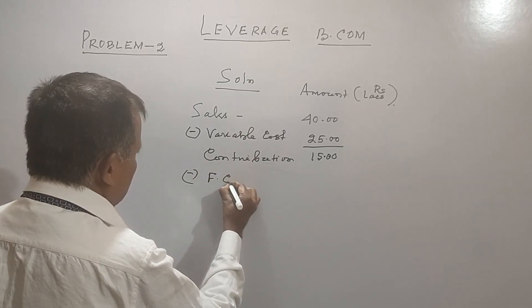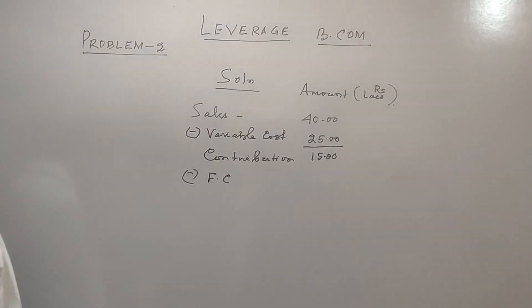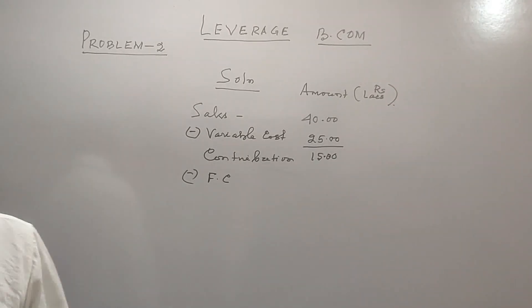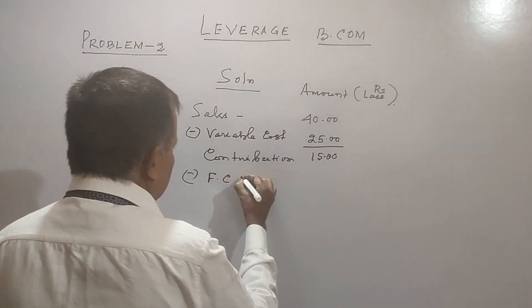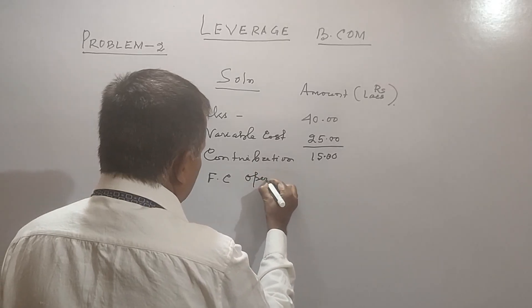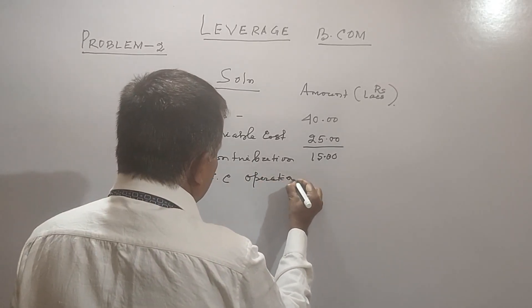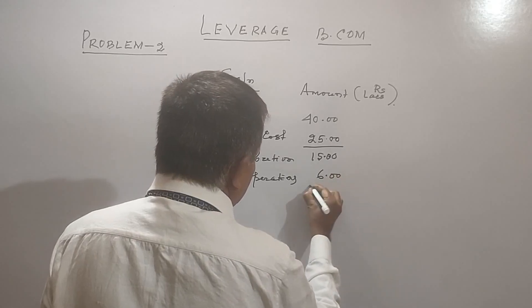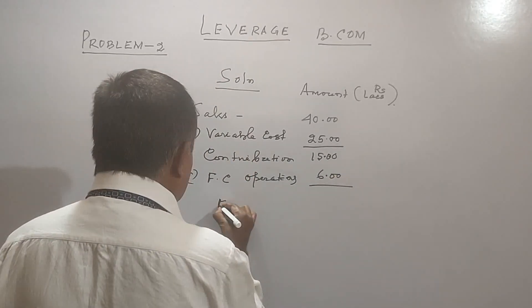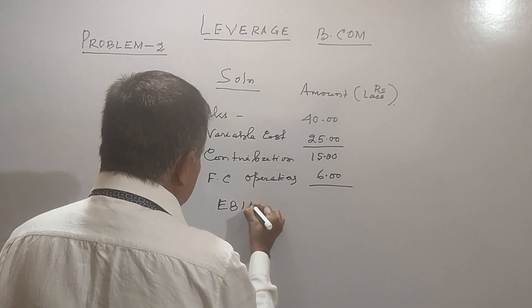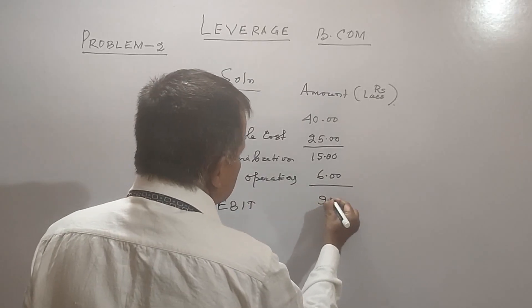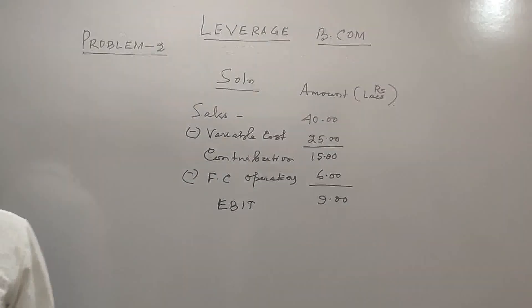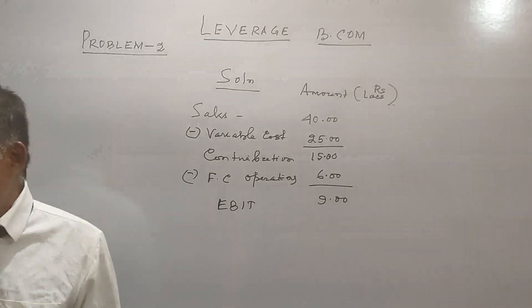From contribution, subtract the fixed cost. Fixed operating cost is 6 lakhs. So it comes to EBIT, which is 9 lakhs. So 9 lakhs is your EBIT.